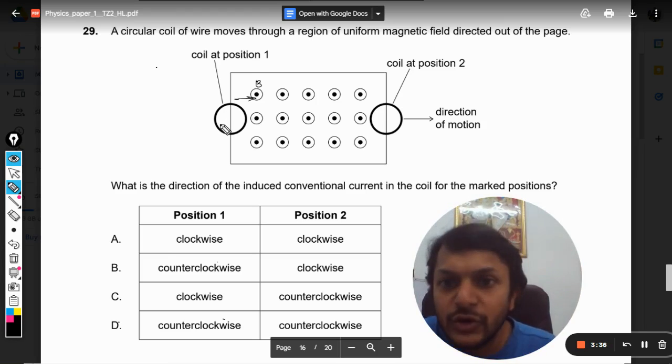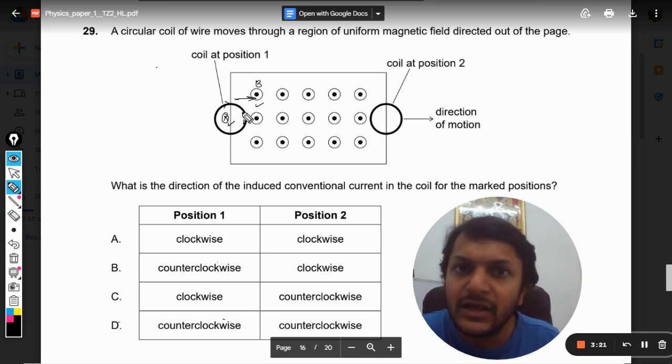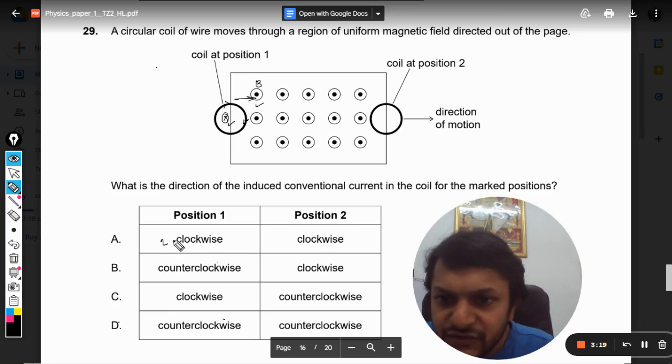So here the current will be clockwise. Only then will it give rise to a magnetic field which is into the board. So this magnetic field will try to counter the increase in the magnetic field when the ring tries to enter. So for position one it will be clockwise.